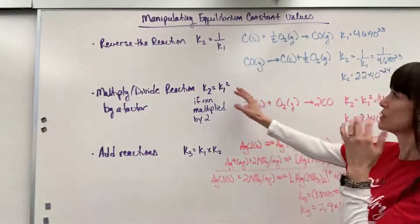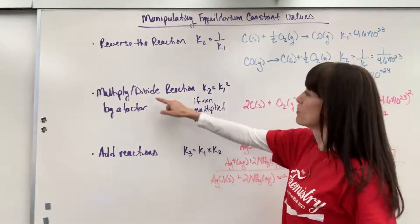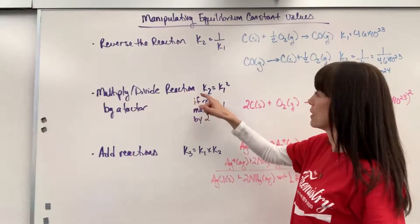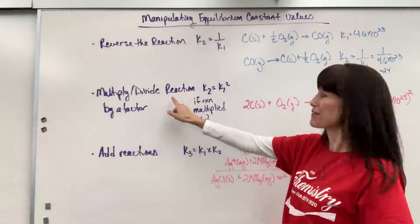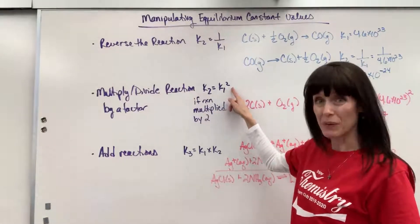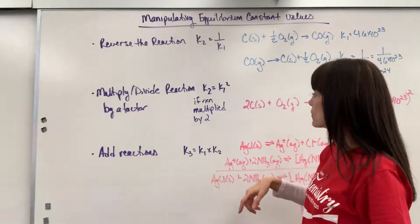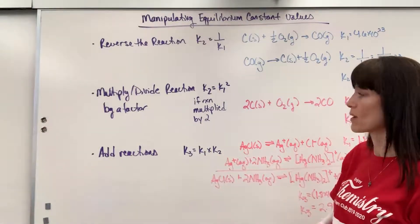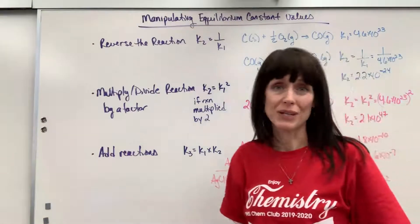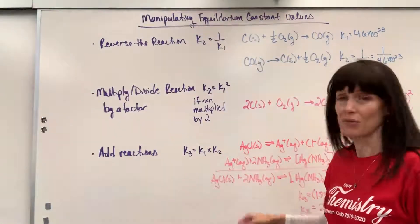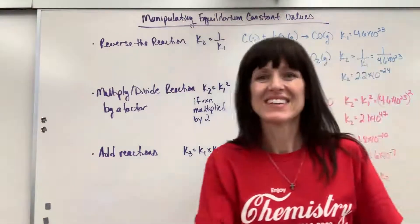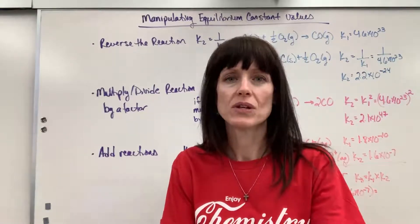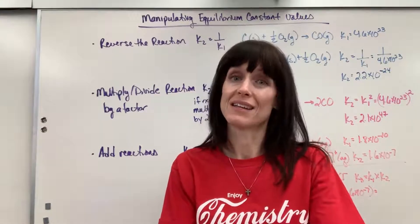Okay, so three manipulations. If you flip the reaction, reciprocate. If you multiply or divide by a factor for a reaction, that becomes the exponent on the original equilibrium expression. And if you add two equations, multiply their equilibrium constants, and that will give you the new equilibrium constant for the new overall reaction. Have a good day. If you need more help on equilibrium, look at the equilibrium playlist on LeanThink. Thanks.